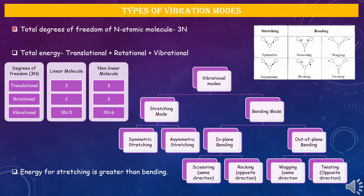For a polyatomic system, the first thing we need to determine is the total number of vibrational modes involved. If n number of atoms are present in a molecule, then the total number of coordinate values is 3n, which is the degrees of freedom for an n-atomic molecular system. The total energy of movement can be divided into three parts: translational, rotational, and vibrational.